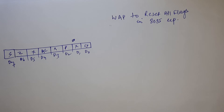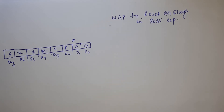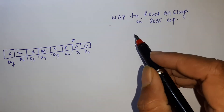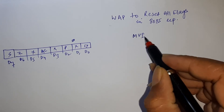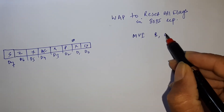We can write a program. Basically, you can reset all the flags by executing an instruction which affects them. Here I am going to discuss a method to do so without using a stack, because we have two or three methods for doing this. I am going to take the easiest method. So first, just take any register.